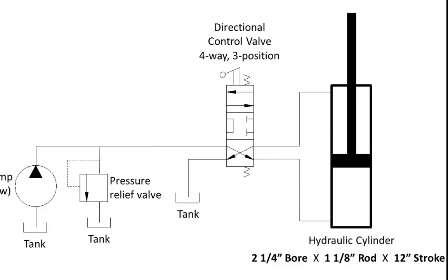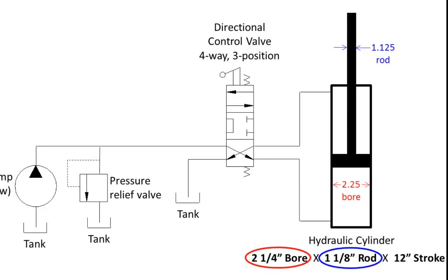The bore size is simply the inside diameter of the cylinder — that's what the word bore means, the diameter of a hole. In this case it's two and a quarter inches. The rod size is the diameter of the rod, and the stroke indicates how far the rod moves as the cylinder extends or retracts.